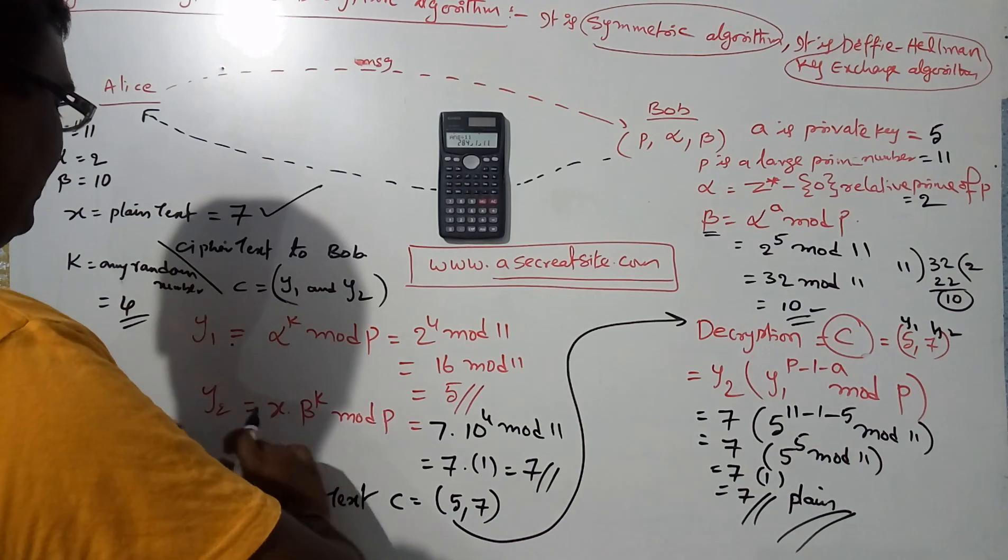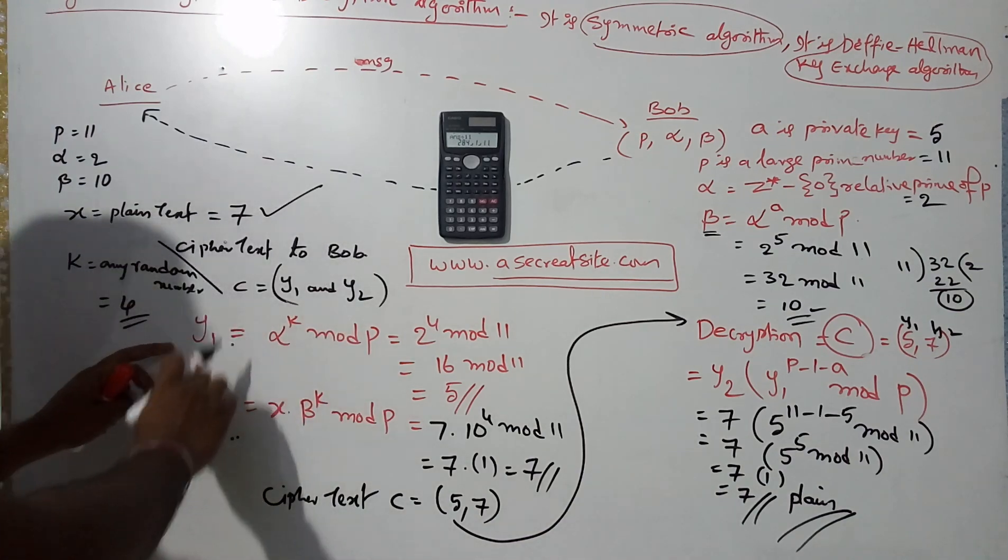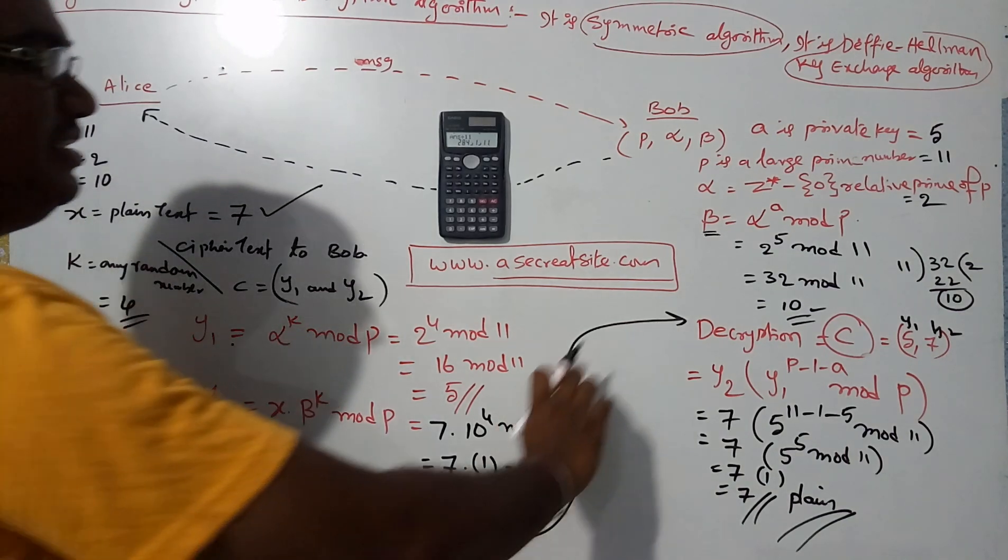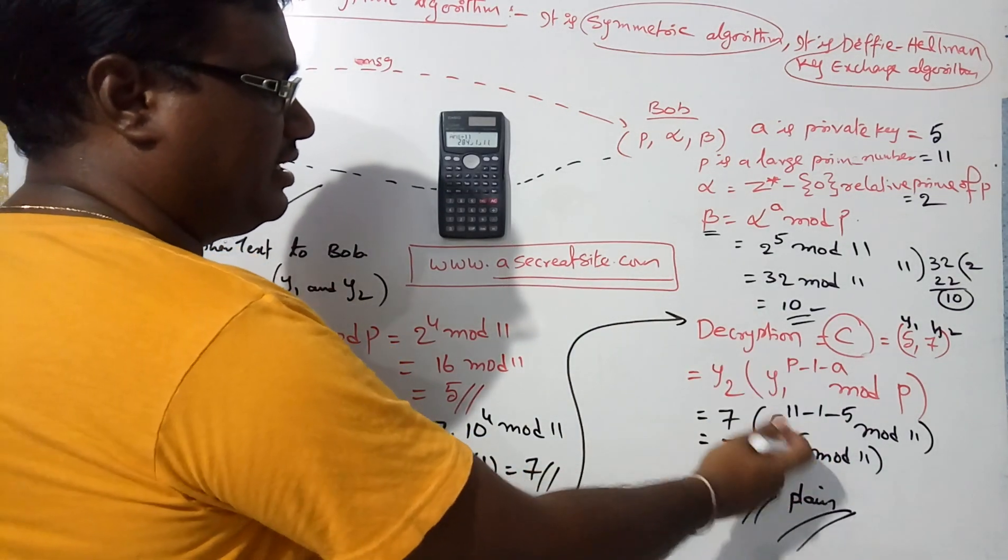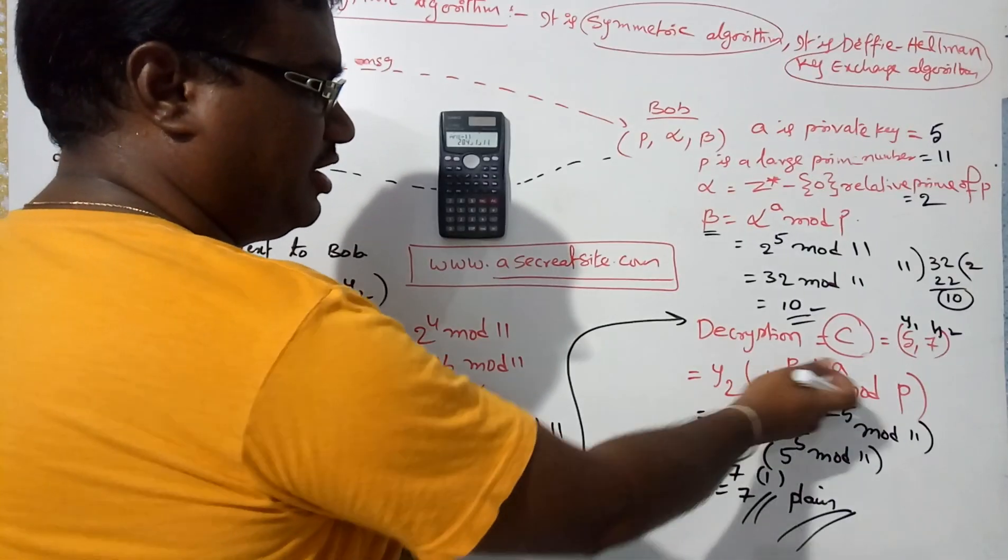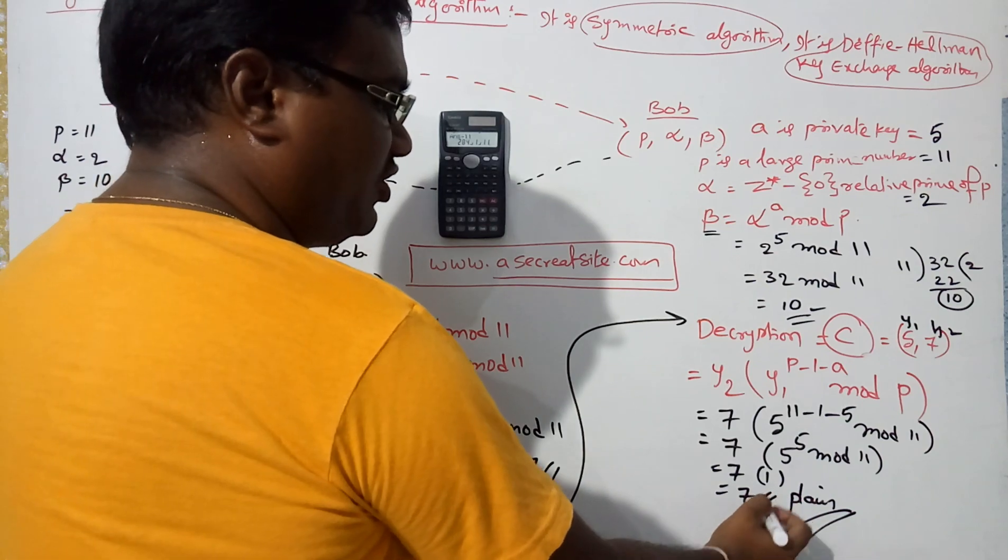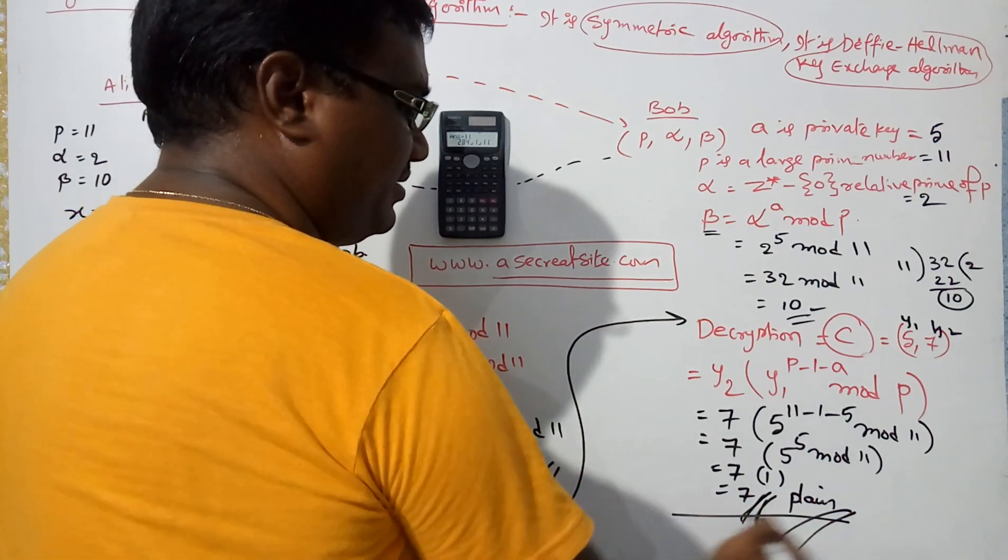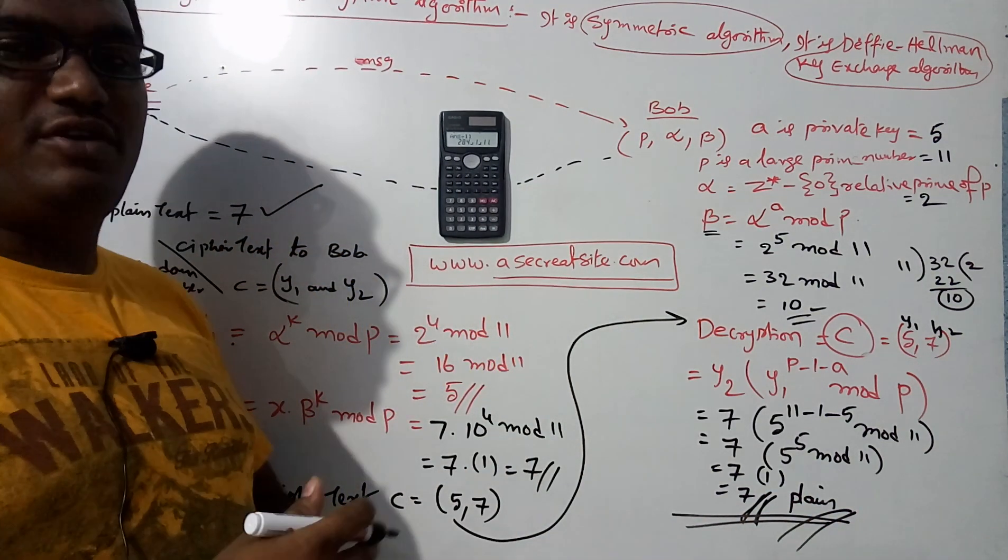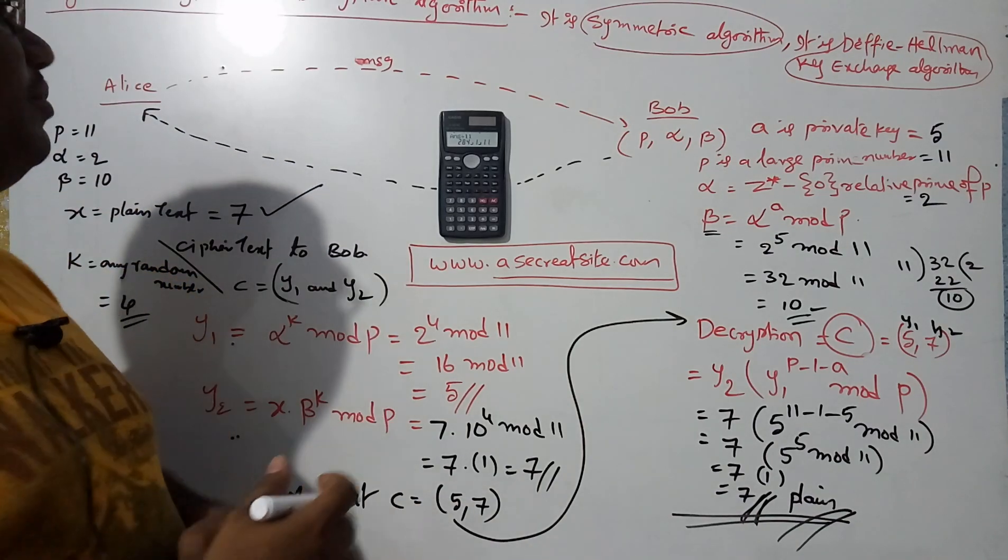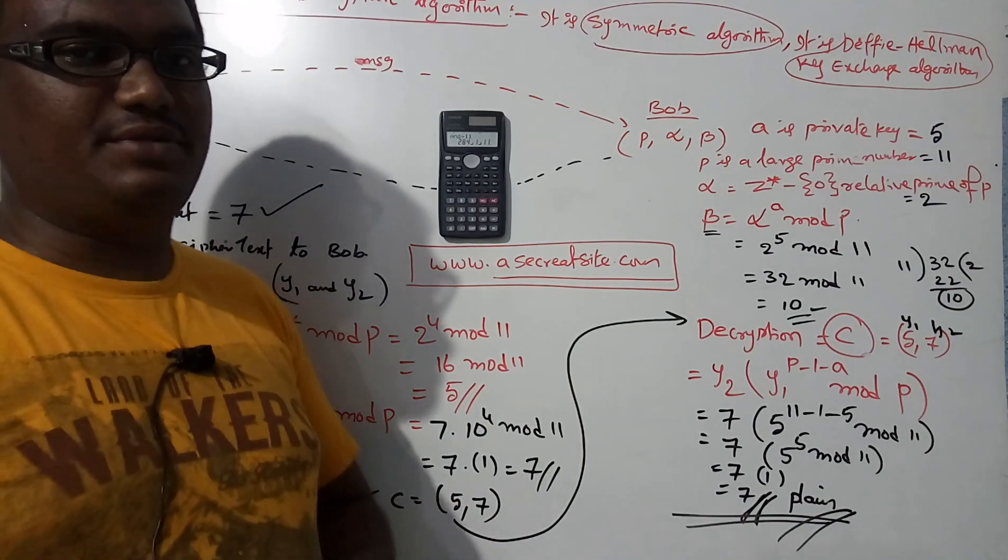We have successfully decrypted the data. The original plaintext is 7. We encrypted the data as the combination of y1 and y2, sent it to Bob. Bob decrypted the data with the help of the decryption procedure. Finally, we got the original plaintext. Thank you for watching this ElGamal encryption decryption demonstration.